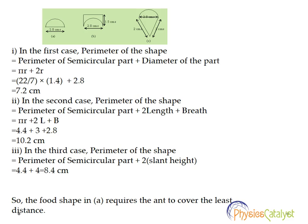In the second case, the perimeter of the shape consists of three things: first the perimeter of the semicircular part, then we have two length sides here, and then one breadth side.